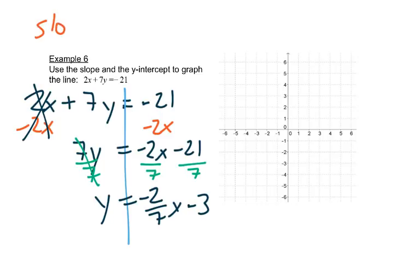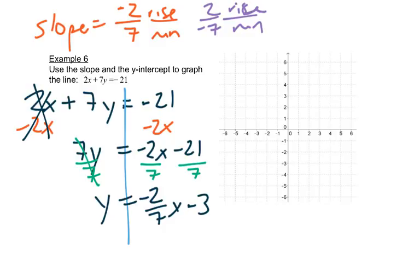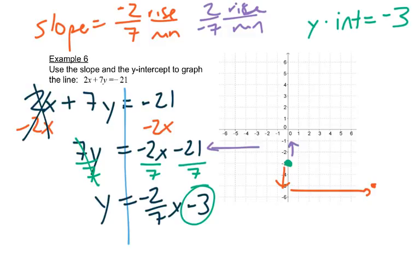So my slope is negative 2 over 7, or I could write 2 over negative 7. Either is okay, but you have to choose one place. My y-intercept is the negative 3 at the end. So I start with my y-intercept. And then from there, if I do the first slope, I would go down 2, right 7. It's kind of right off that graph. If I go my other slope, I would go up 2, left 7, again right off the graph here. And that gives me my line.